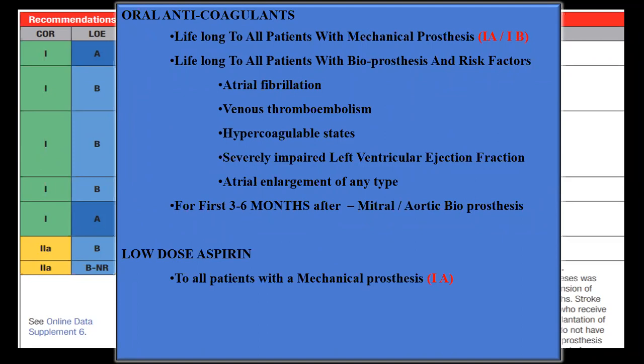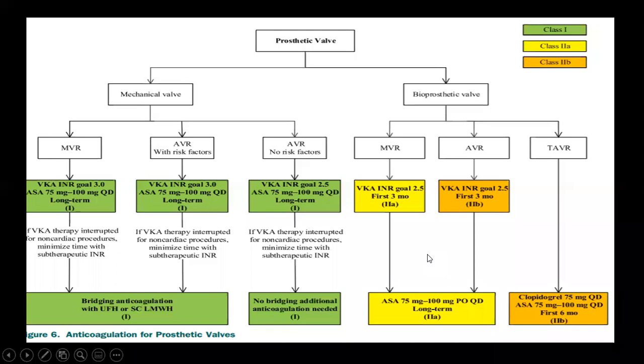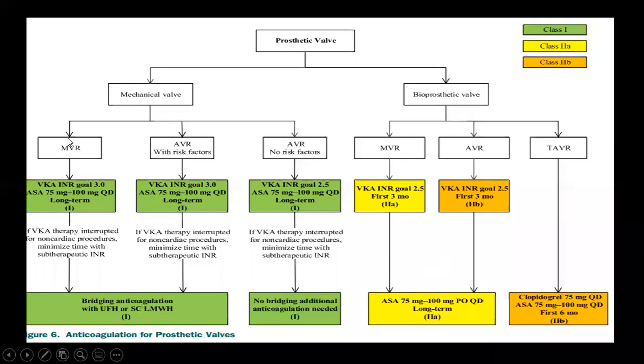Low-dose aspirin is given to all patients with mechanical prostheses lifelong, to all patients with bioprostheses lifelong (Class 2 indication), and to all patients with prosthetic rings. Target INR: all mechanical mitral valve replacements and mechanical aortic valve replacements with high-risk factors (atrial fibrillation, large atrium, history of stroke, severely reduced EF, venous thromboembolism) — target INR is 3.